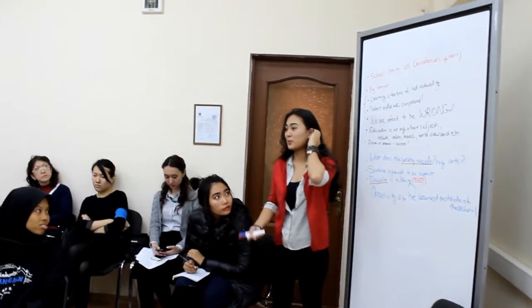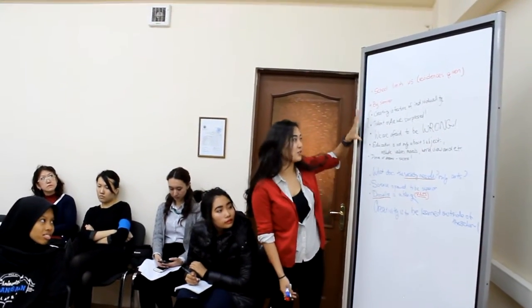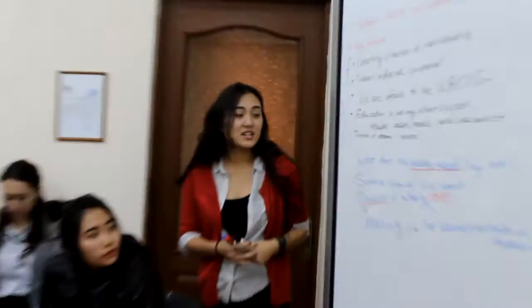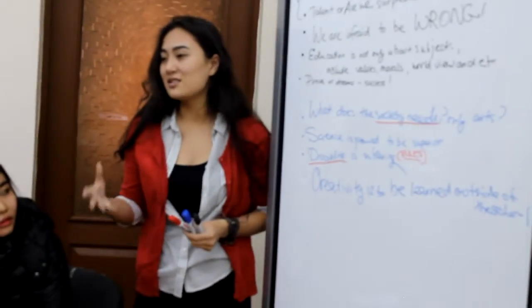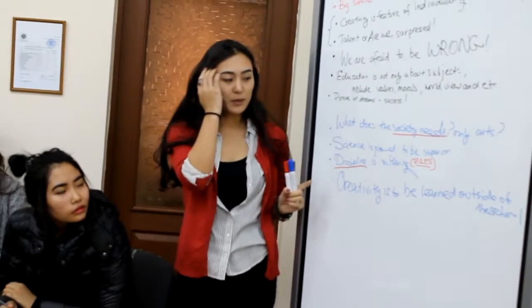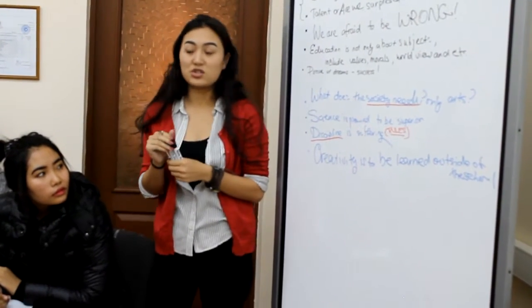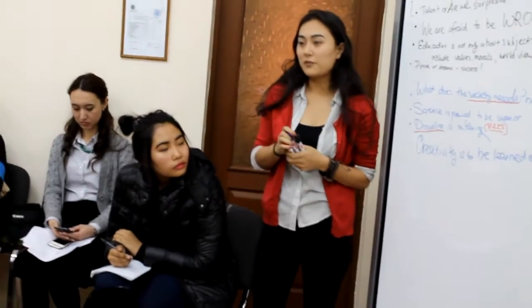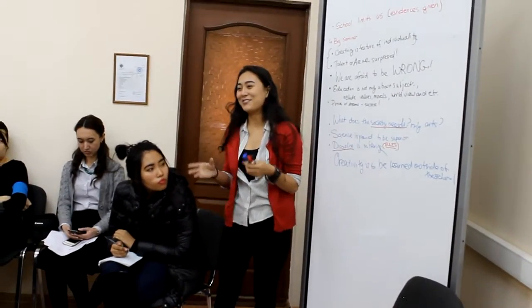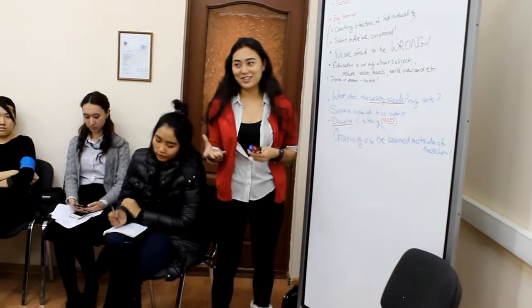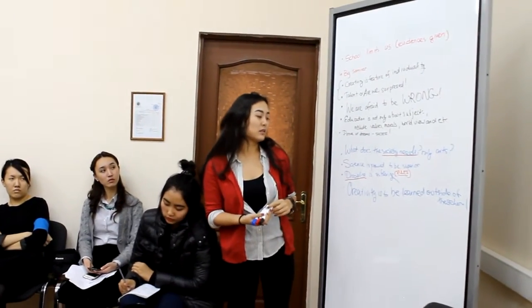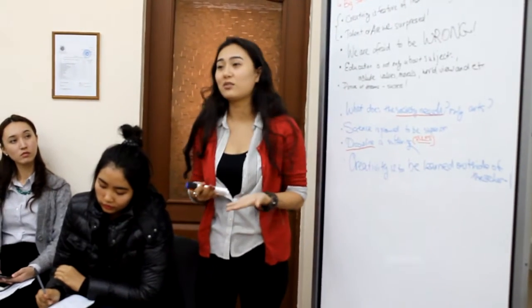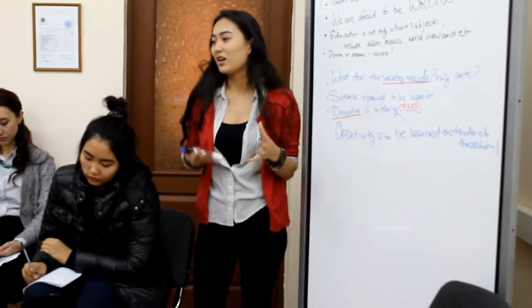Frankly, we've had more ideas in the first part, because I believe it was easier for us to prove that side, but here we've had some really great ideas. For example, you started out with a great thought about society's needs, not only about a person's needs — that was a big point. Next was that science is proved to be superior, and you gave some really efficient examples. The next one was about discipline from the point of view of a teacher — rules are still important and they have to exist. And last but not least, creativity is to be learned outside of the classroom — that was a kind of solution for the problem. Those are your great ideas, guys.